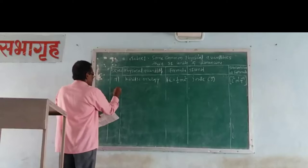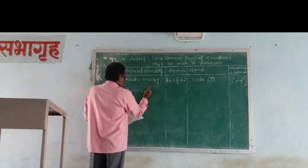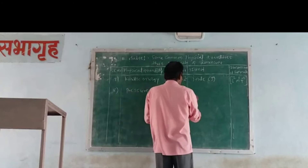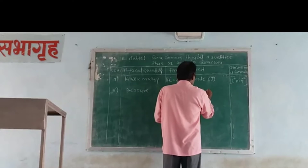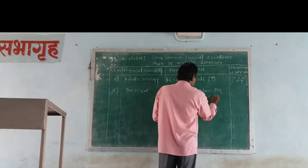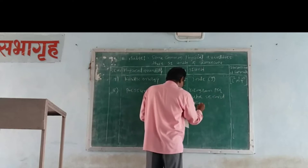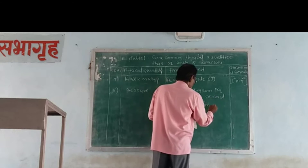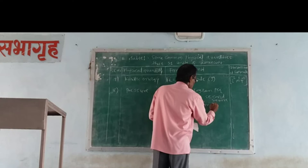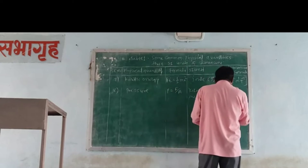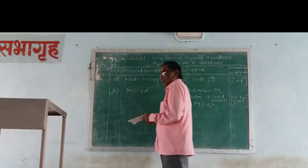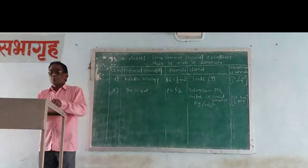Last, pressure. P is equal to force divided by area. The unit is kilogram per meter per second squared, and the dimensions are L minus 1 M1 T minus 2.